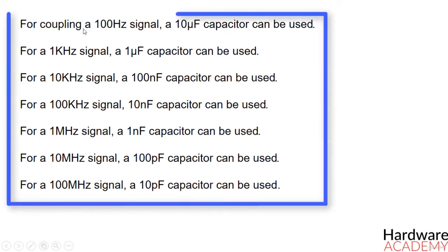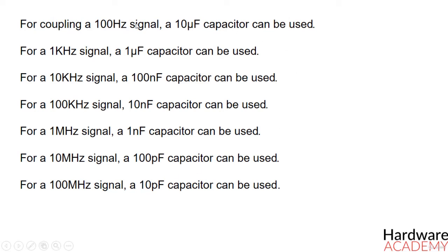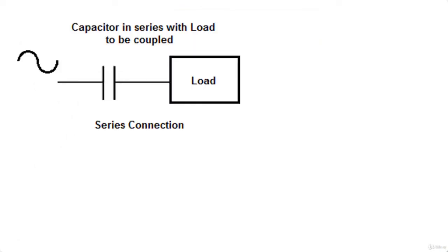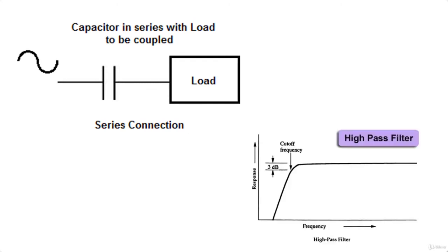Here you can see a rough guideline of capacitors that can be used for various frequencies. For coupling a 100 Hz signal, a 10 µF capacitor can be used; for a 1 kHz signal, a 1 µF capacitor will be good, and so on. Coupling capacitor value is calculated in consideration with the cutoff frequency of the circuit. Remember that any coupling capacitor will form a high-pass filter circuit. The capacitor value and the input impedance of the circuit will decide the cutoff frequency of the high-pass filter.